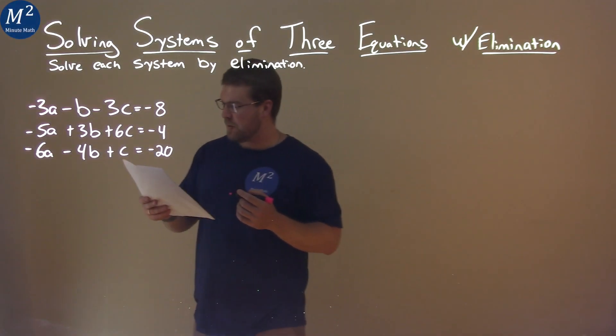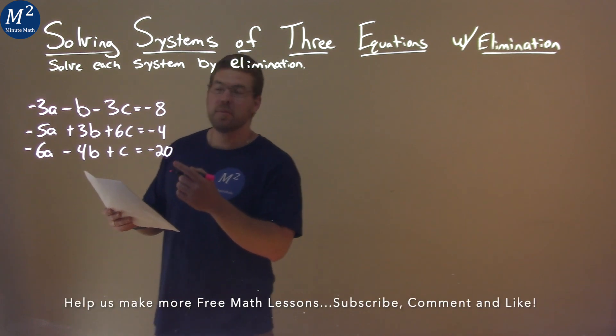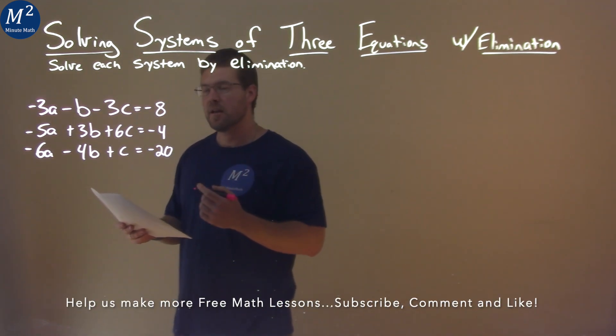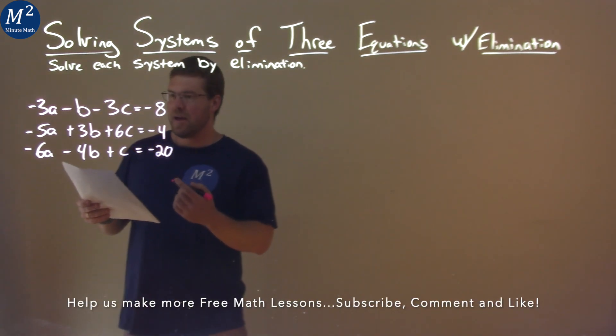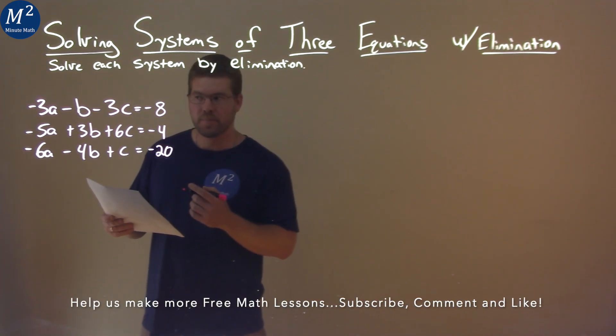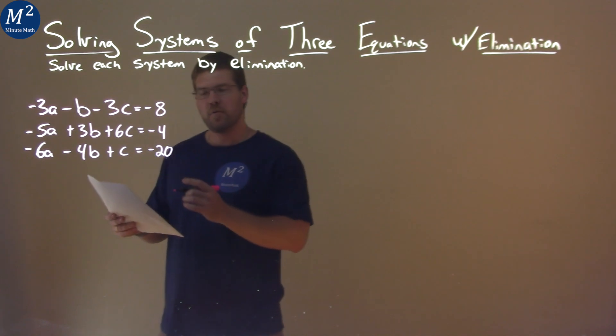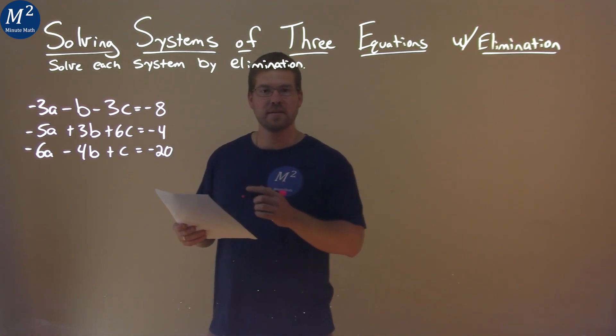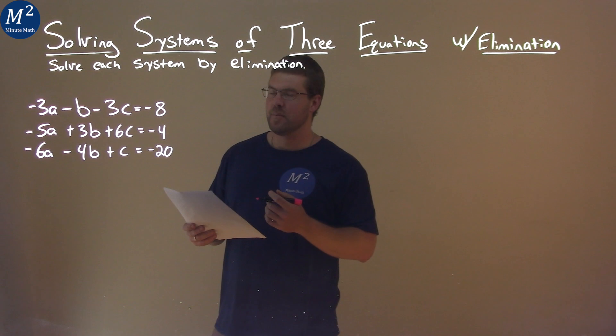We're given this problem right here: negative 3a minus b minus 3c equals negative 8, negative 5a plus 3b plus 6c equals negative 4, and negative 6a minus 4b plus c equals negative 20, and we need to solve this by elimination.